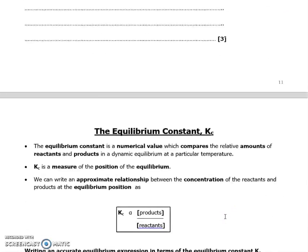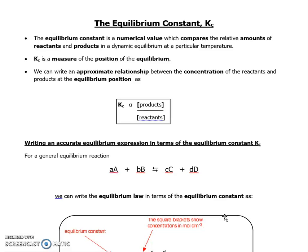Okay, Kc. Kc is the equilibrium constant. Now we're going to see a lot of equilibria in the second year, so it's really important that you get to understand this now. The equilibrium constant is where we put a numerical value which compares the relative amounts of the reactants and products in a dynamic equilibrium. It is temperature dependent. It's very important. We'll come back to that later.